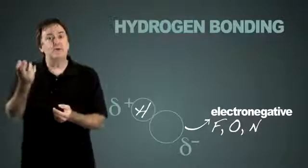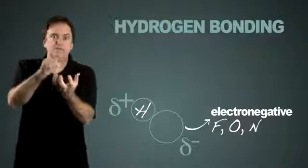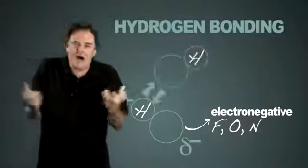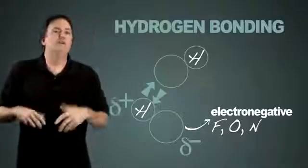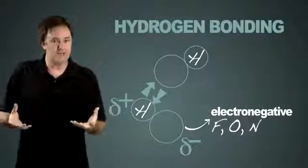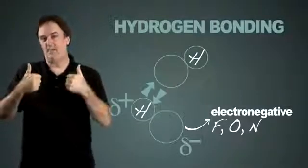And when it is, it becomes so partial positive, and the oxygen or nitrogen or fluorine becomes so partial negative, that you get an even higher amount of attraction. So we go ahead and classify that in its own class. We call it hydrogen bonding. But it's really just dipole-dipole interaction, just up a notch.